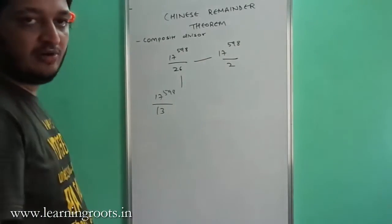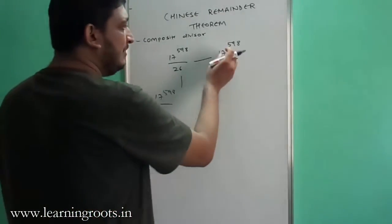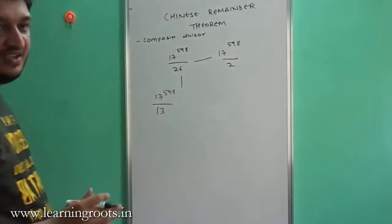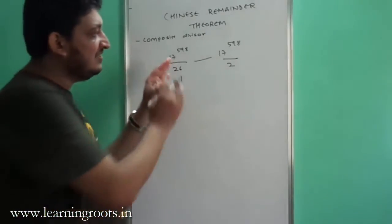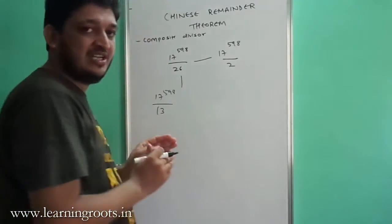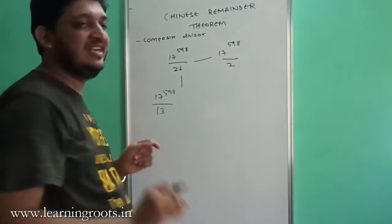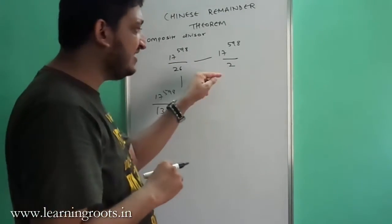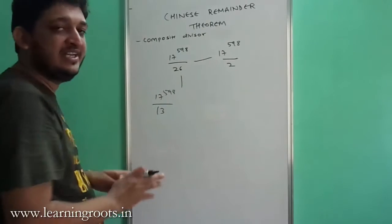Now 17 raised to 598 mod 2 is nothing but 16 plus 1 raised to 598 mod 2. If you split this as 16 plus 1, then every term of the expansion of 16 plus 1 raised to 598 will contain 16 and is hence divisible by 2 except the last term which will be 1 raised to 598.